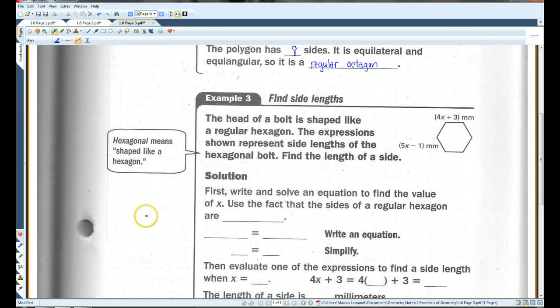The head of a bolt is shaped like a regular. Remember, regular means equilateral and equiangular. Hexagon. A hexagon has six sides. The expressions shown represent the side lengths of the hexagonal bolt. Find the length of the side. All right. So, all of these sides are congruent. That means this and this are equal.